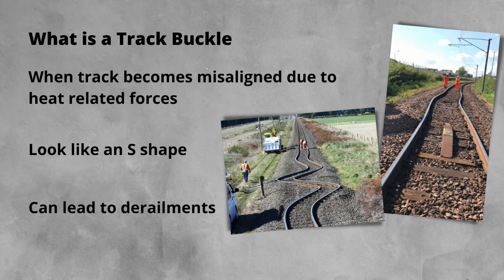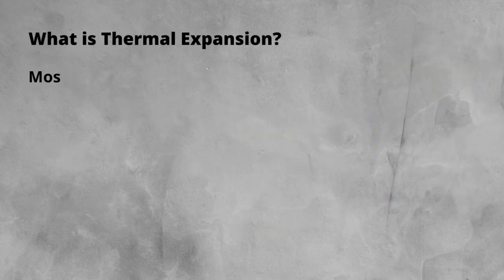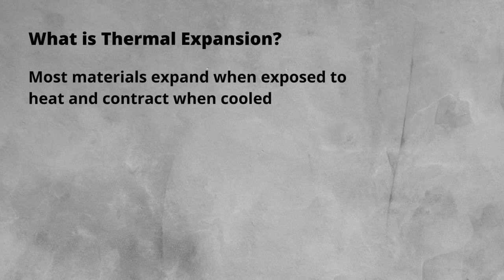To understand why track buckles occur, first we need to dive into some material science and get an understanding of thermal expansion. Most common materials expand when exposed to heat, such as the sun on a hot summer's day, and contract when cooled. They will contract further when exposed to cold temperatures, such as when it's frosty. The steel used to manufacture rails is no different.